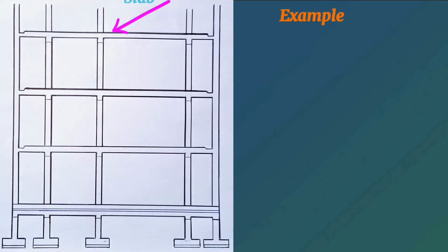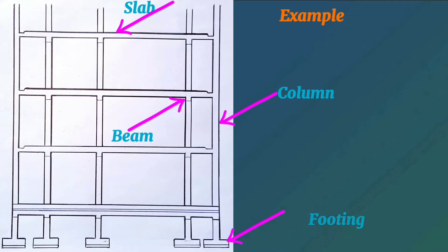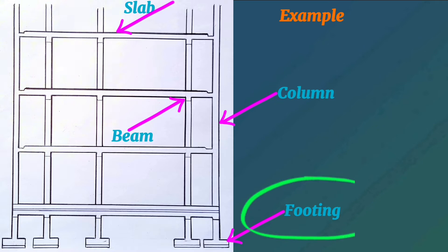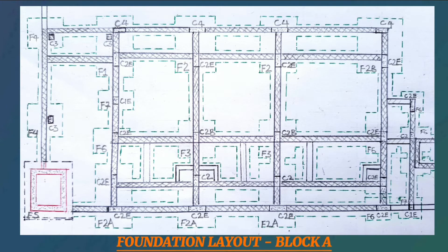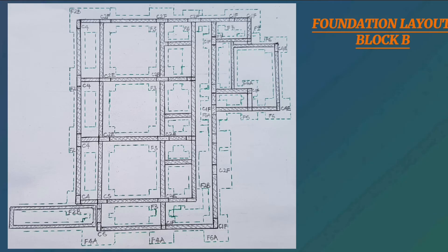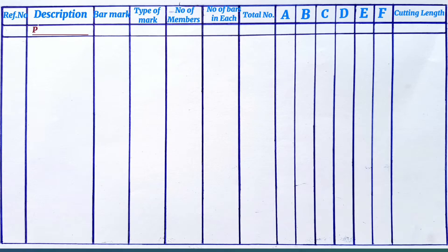We are going to look at an example of a four-storied building. The concept remains the same for projects bigger or smaller than this. By the end of this video, you will have known how to prepare the bar bending schedule for pads or footings. We prepare a bar bending schedule using structural drawings. This is the foundation layout for block A, and this is the foundation layout for block B.